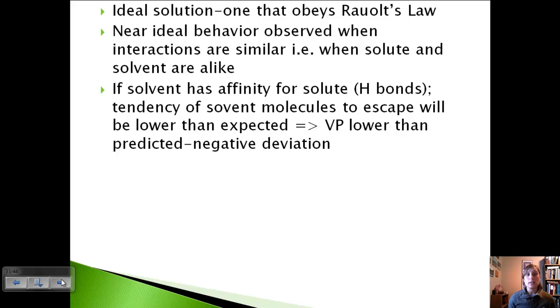So a version of this is if the solvent has an affinity for the solute, so hydrogen bonds are involved, there's polarity, something where they're very strongly attracted to each other, then the tendency of those solvent molecules to escape is going to be even lower than expected because they like the solute. They're attracted to each other. They want to stay. And if this tendency to escape is lower, then that means the vapor pressure is going to be lower than predicted, and that's called negative deviation.